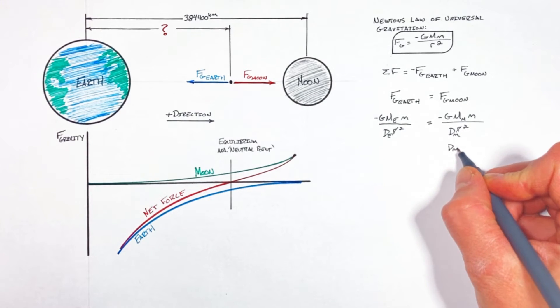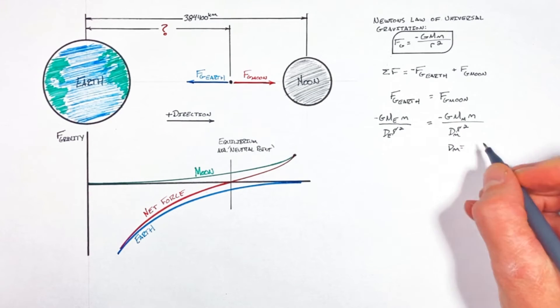So I'm just going to say that the distance between the ship and the Moon, that's dm, is equal to the distance between the Earth and Moon, I'll call it dem, minus de, the distance between the ship and Earth.